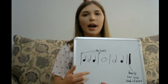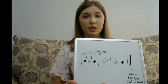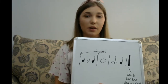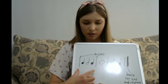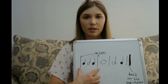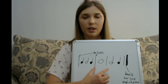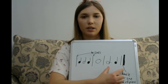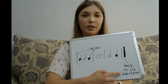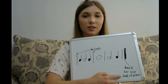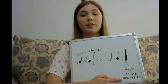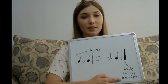Here I have four beats in each measure. This little example I wrote down has three measures — this is measure one, this is measure two, and this is measure three, complete with a double bar line, which signifies the end of a piece.